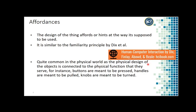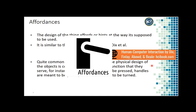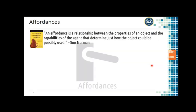Affordances are quite common in the physical world as the physical design of objects is connected to the physical function they serve. For instance, buttons are meant to be pressed, handles are meant to be pulled, knobs are meant to be turned. By looking at a sign or handle, we know we have to push or drag it to make it open. Don Norman says an affordance is a relationship between the properties of an object and the capabilities of the agent that determines how the object could possibly be used.